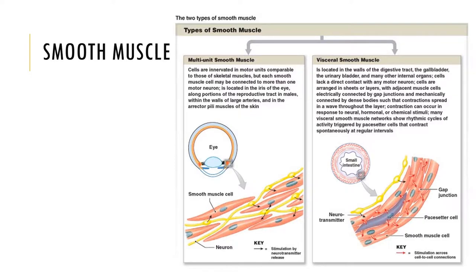This slide shows the types of smooth muscle — both multi-unit and visceral smooth muscle. The visceral smooth muscle lacks contact with motor neurons, and the cells are connected by gap junctions so that contractions spread throughout the layer.